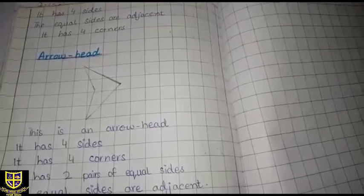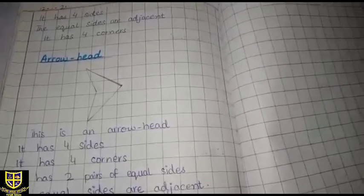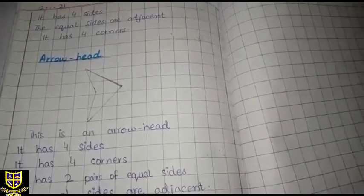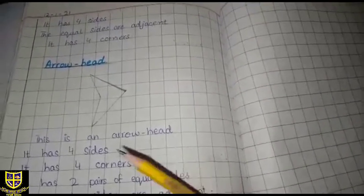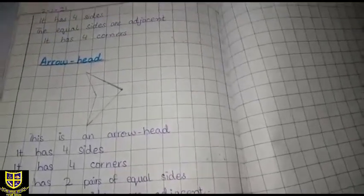Next one is arrowhead. You have to write arrowhead. It is the same as it is, just as you draw. You also have to write it. Fine. You have to write the date.